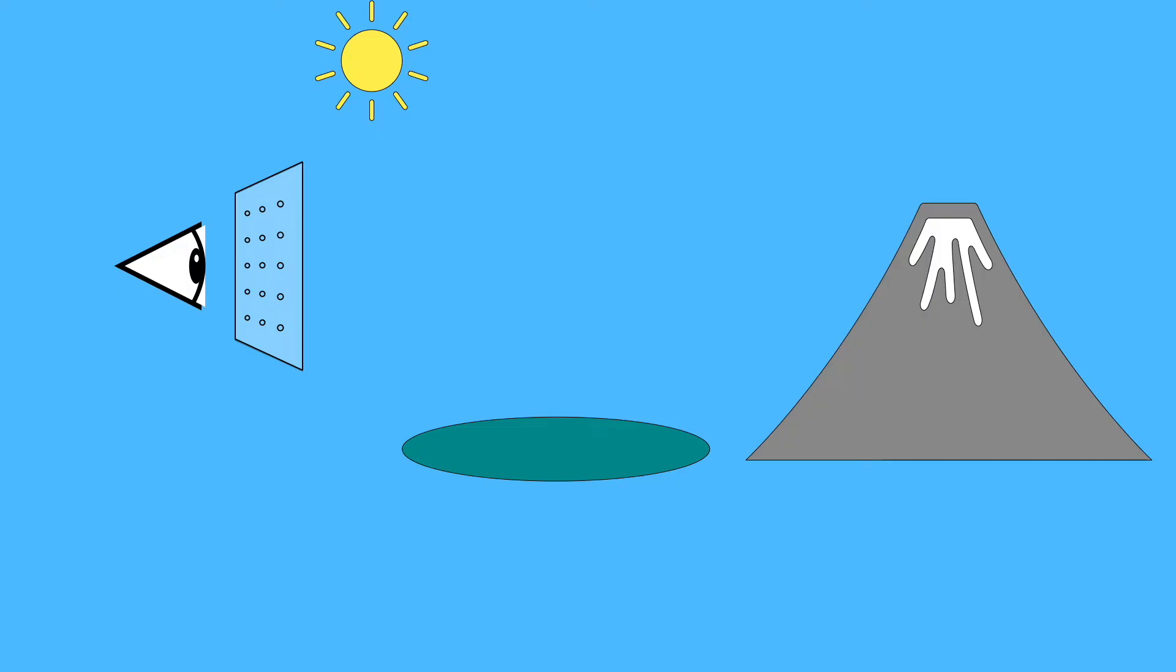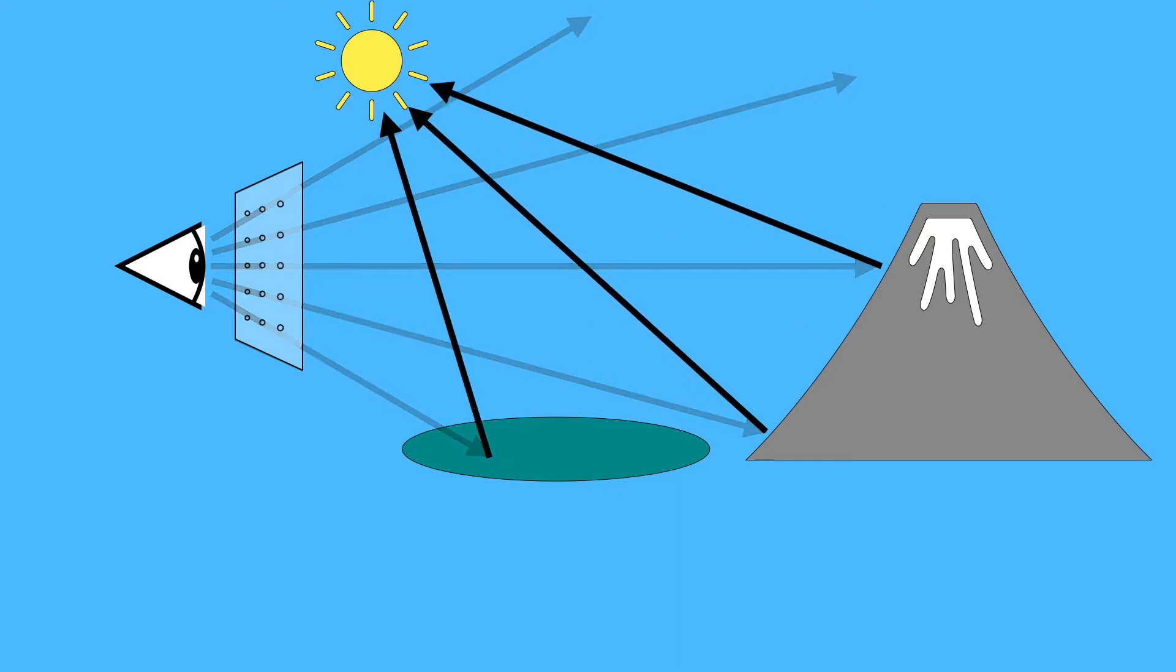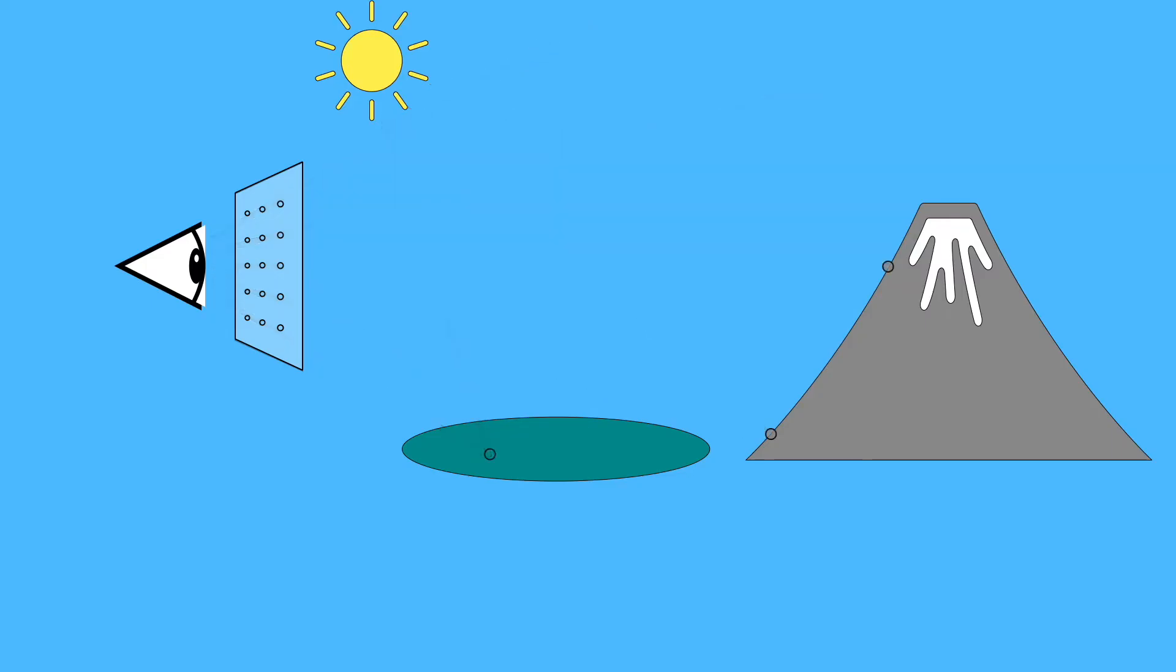Cool, we now have a simple rendering algorithm. Send a ray from the eye through each pixel and find the first point of intersection with the scene. Cast rays from these intersection points to the light source and shade each point that's not in shadow.